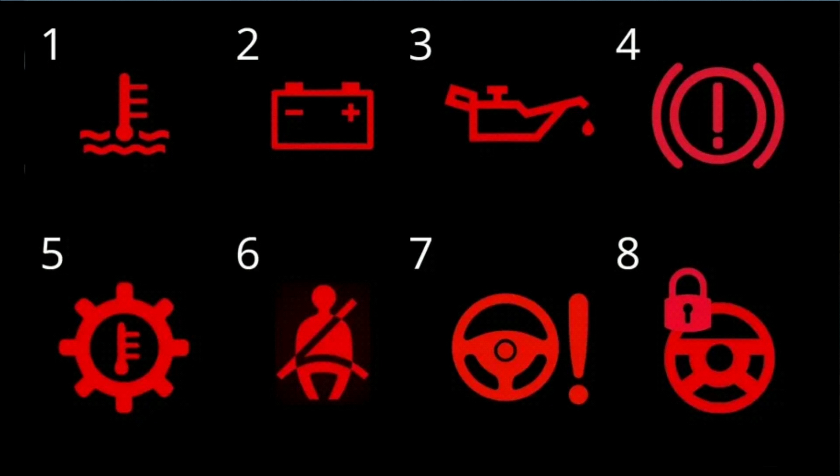Number 8: Steering Lock Warning. A steering wheel with a lock means your steering wheel cannot be moved. A spring-loaded lever locks it in place to prevent anyone from moving the steering wheel without the actual key. The steering lock system deactivates once you turn the key in the ignition.